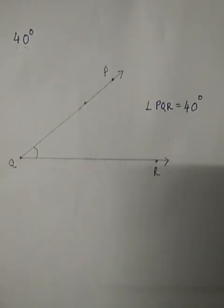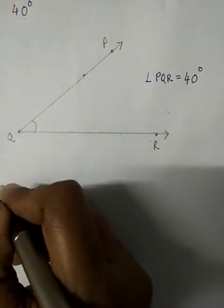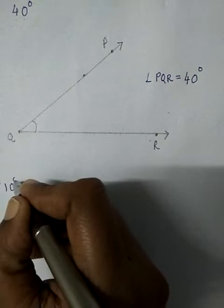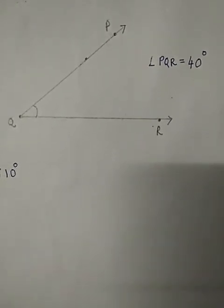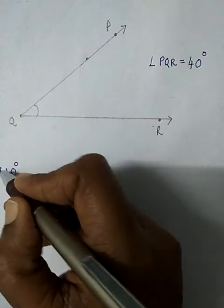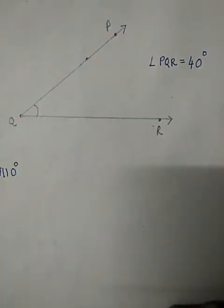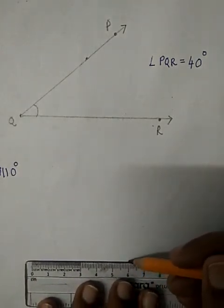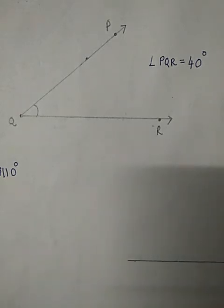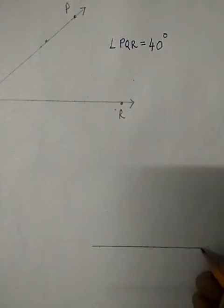Or ek angle mein dikhati hu abhi. Ek aur dusra angle le lete hain. Let us take say angle 110 degree. 110 degree children, we are going to draw. So same, karna kya hai? 110 degree ke liye bhi same process. First pehla kaam sabhi mein ek hi hai. I will take a line. Let me draw a line. Line draw karne ke saath saath mujhe kya karna hai? Line mein arrow de na hai. Line ka end yaha par hai, so maine yaha arrow de diya.